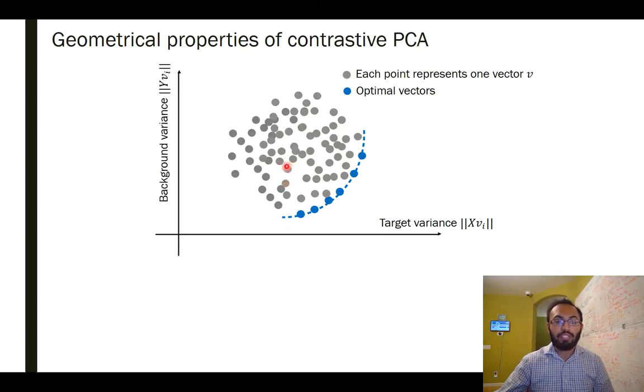What I've done here is each of these dots represent one vector. And on the x-axis represents the variance of that vector in the target data set. On the y-axis represents the variance of that vector in the background data set. Clearly, the vector that should be returned by contrastive PCA shouldn't be a vector over here. Like this vector, there's no reason for you to return it, because there is another vector out there that has a higher target variance and a lower background variance, such as this one over here.